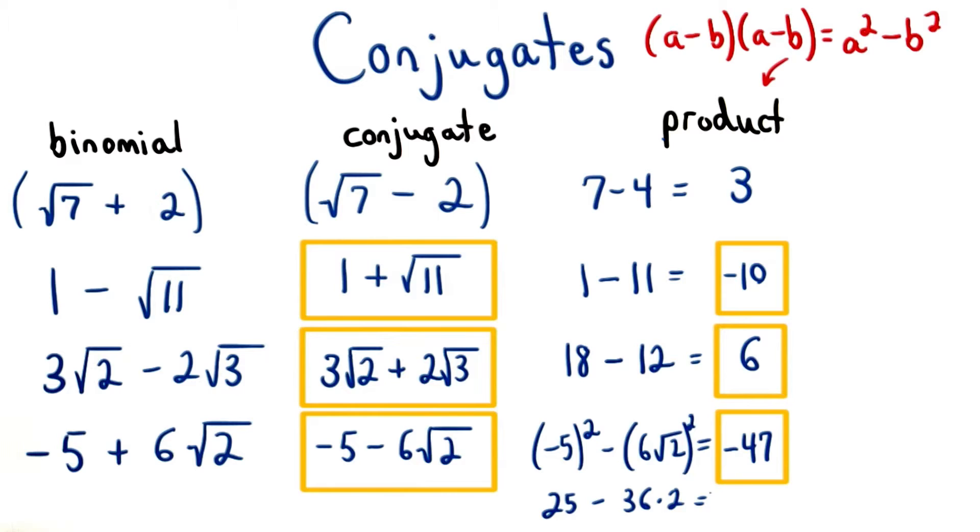And for the last one, we'll have negative 5 squared for our a term, and 6 root 2 squared for the b. Negative 5 squared is 25, and 6 root 2 squared is 36 times 2, or 72. 25 minus 72 equals negative 47.